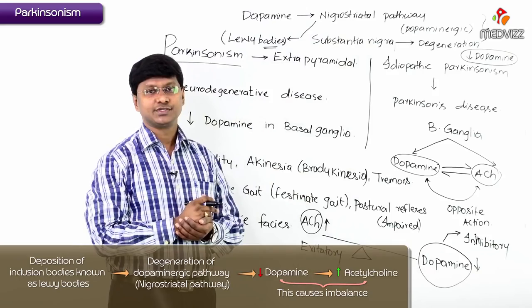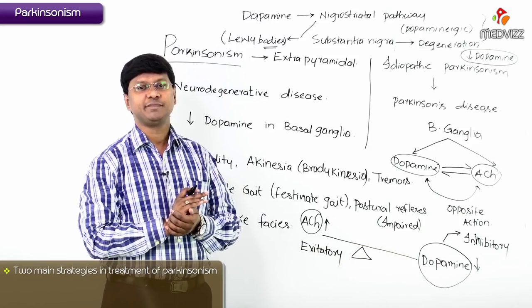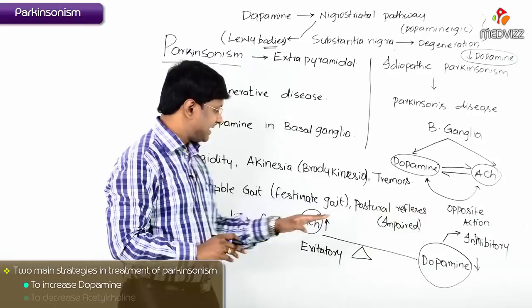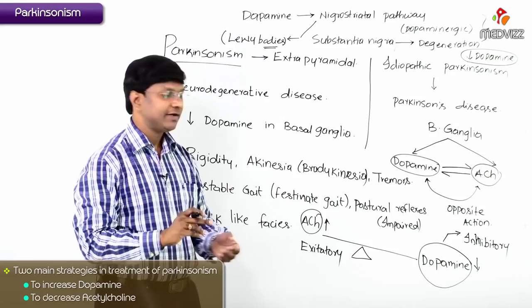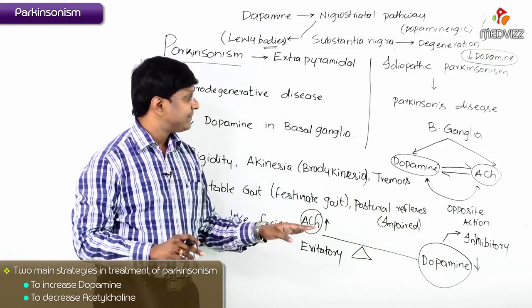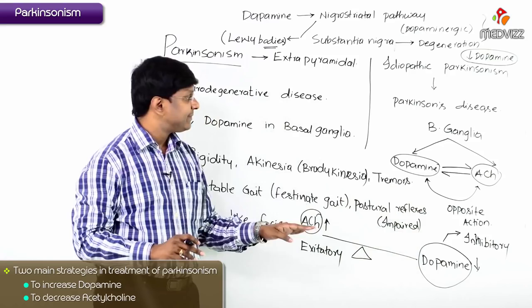The two major strategies for the treatment of Parkinsonism are to increase dopamine and decrease the central cholinergic activity. So in the treatment, you either increase the dopamine or decrease the acetylcholine, and thereby these symptoms get corrected.